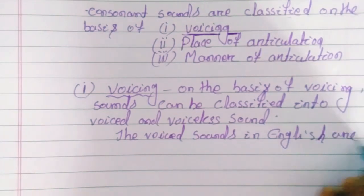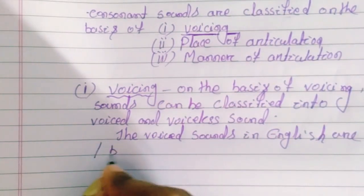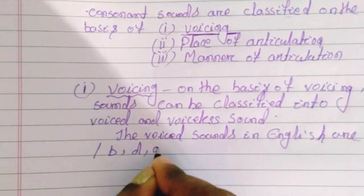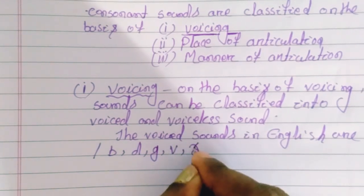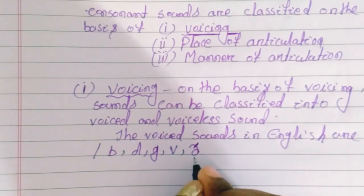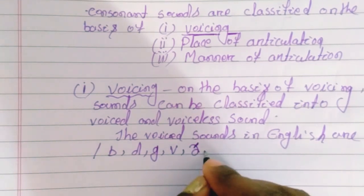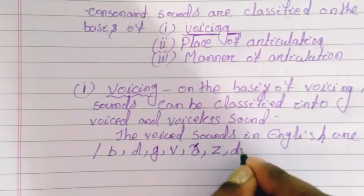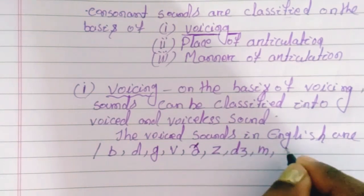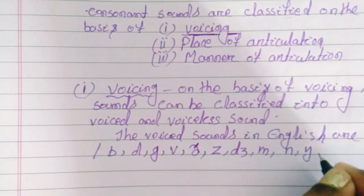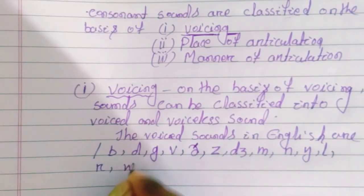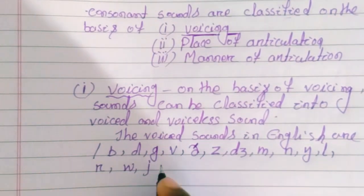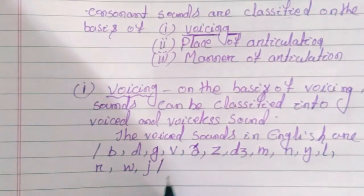The voiced sounds in English are: /b/, /d/, /g/, /v/, /ð/, /z/, /dʒ/, /m/, /n/, /ŋ/, /l/, /r/, /w/, and /j/. I have also taught you how to write these sounds. These are voiced sounds in English, and all other sounds are voiceless sounds.